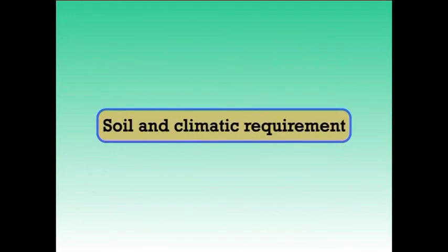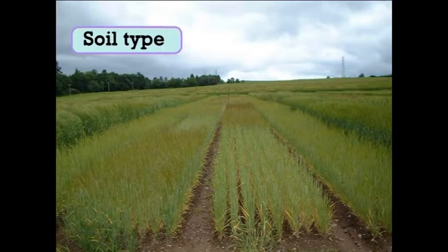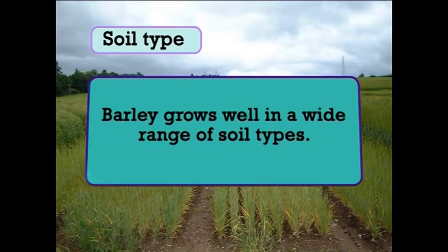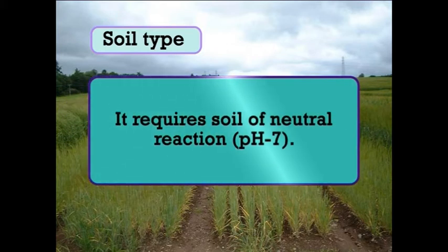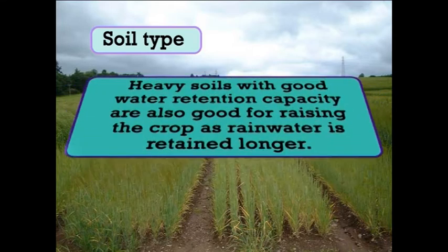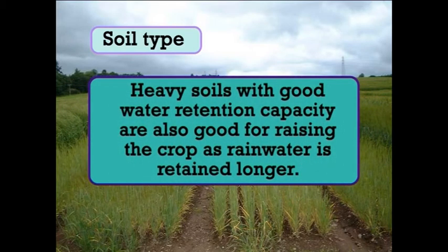Regarding soil and climatic requirements — soil type: barley grows well in a wide range of soil types. It prefers well-drained loam and clay loam soils, though it is raised in sandy loams and black soils too. It requires soil of neutral reaction, that is pH 7. Heavy soils with good water retention capacity are also good for raising the crop, as rain water is retained longer. However, soils with poor structure and poor drainage are not suitable as barley is sensitive to waterlogging. Barley can be successfully grown on lighter soils, provided their water and nutrient holding capacity are improved.